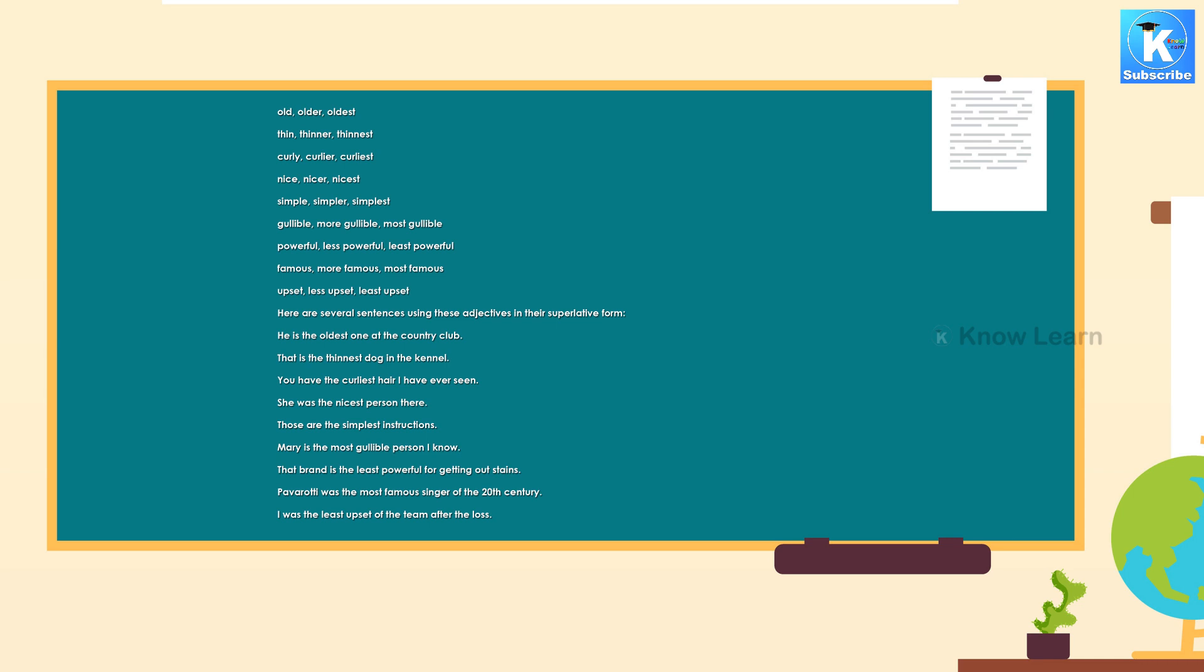Here are several sentences using these adjectives in their superlative form. He is the oldest one at the country club. That is the thinnest dog in the kennel. You have the curliest hair I have ever seen. She was the nicest person there. Those are the simplest instructions. Mary is the most gullible person I know. That brand is the least powerful for getting out stains. Pavarotti was the most famous singer of the 20th century. I was the least upset of the team after the loss.